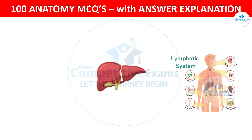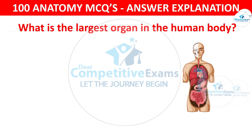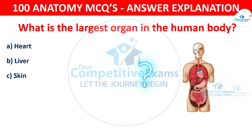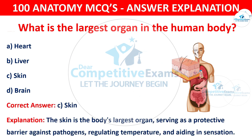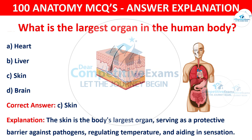Question number 86: What is the largest organ in the human body? The options are: Heart, Liver, Skin, or Brain. The correct answer is C — skin. The skin is the body's largest organ, serving as a protective barrier against pathogens, regulating temperature, and aiding in sensation.